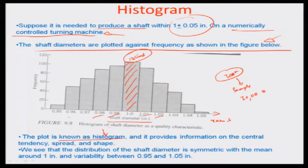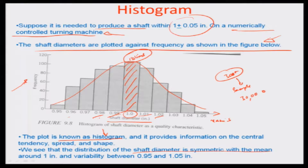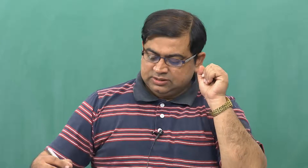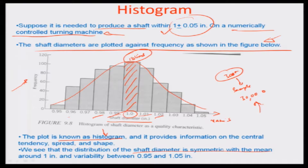The histogram shows a bell-shaped distribution, and from it we can see that the distribution of shaft diameter is quite symmetric about the mean value of 1 inch. When the specification is 1 inch plus or minus 0.05, the highest number of occurrences in all 300-plus samples fall along the mean of 1 inch. This gives a quick visual understanding of whether the process is in control.